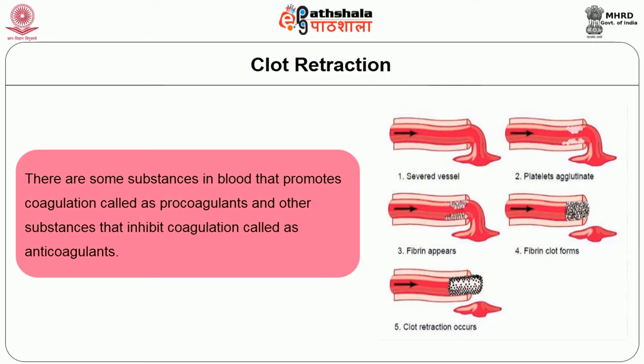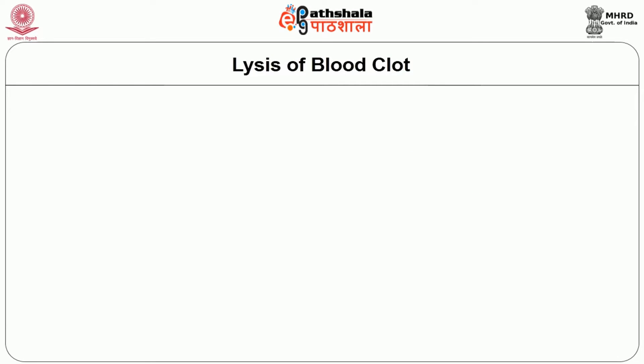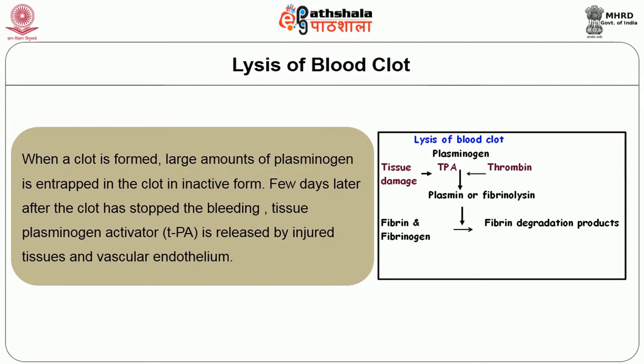The clot cannot remain permanently, so it must lyse — this is called lysis of the blood clot. When the clot forms, large amounts of plasminogen are entrapped within it in inactive form. A few days later, after the clot has stopped the bleeding, tissue plasminogen activator is released by injured tissues and the vascular endothelium. This converts inactive plasminogen into active plasmin. Plasmin then digests the fibrin fibers, fibrinogen, prothrombin, and factors 5, 7, and 12, causing clot lysis.